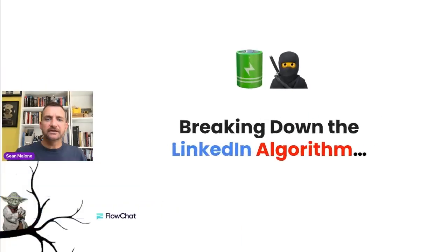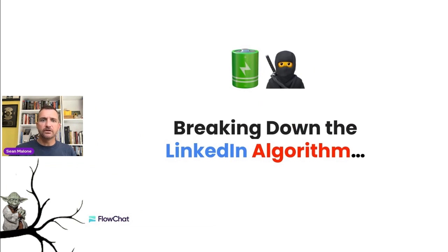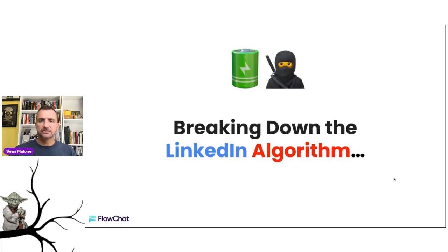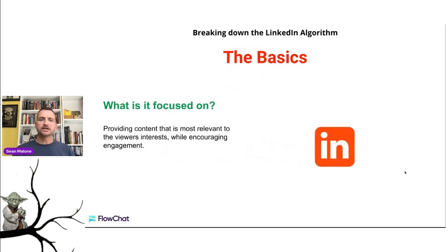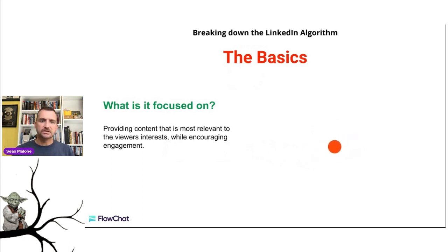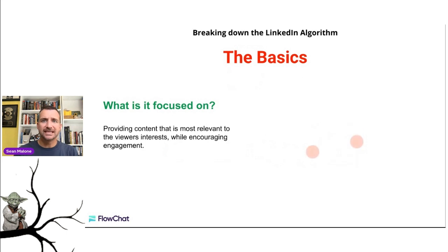I want to dive into breaking down the LinkedIn algorithm. There are a couple of things that are very important when it comes to knowing how to break it down. The LinkedIn algorithm is focused on making sure that every member of its platform provides content that is the most relevant to the viewer's interests while encouraging engagement. You want relevant content and something that's going to entice your viewer to actually take some action.